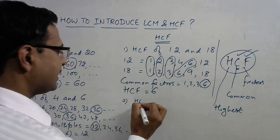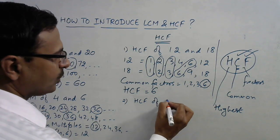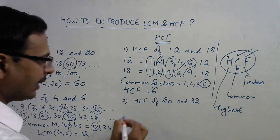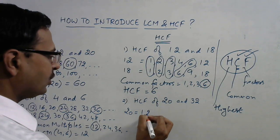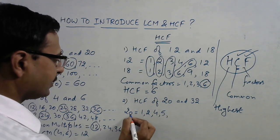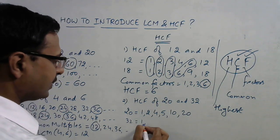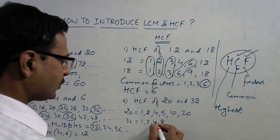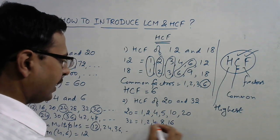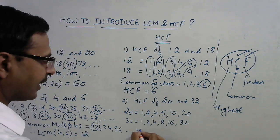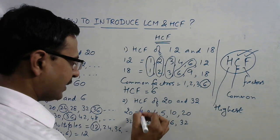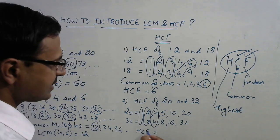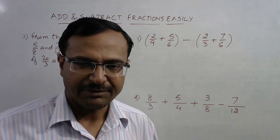Let's take one more example: the HCF of 20 and 32. Factors of 20: 1, 2, 4, 5, 10, 20. Factors of 32: 1, 2, 4, 8, 16, 32. Common factors: 1, 2, and 4. Nothing else is common. So the HCF of 20 and 32 is the highest common factor, which is 4.